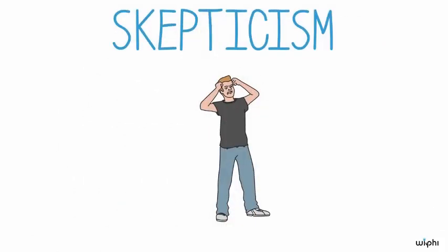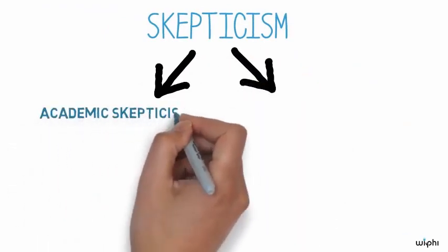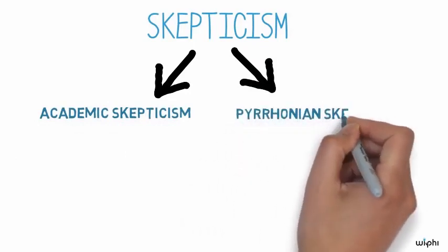Our word skepticism comes from ancient Greece, the home of not one but two great skeptical traditions: academic skepticism and Pyrrhonian skepticism.